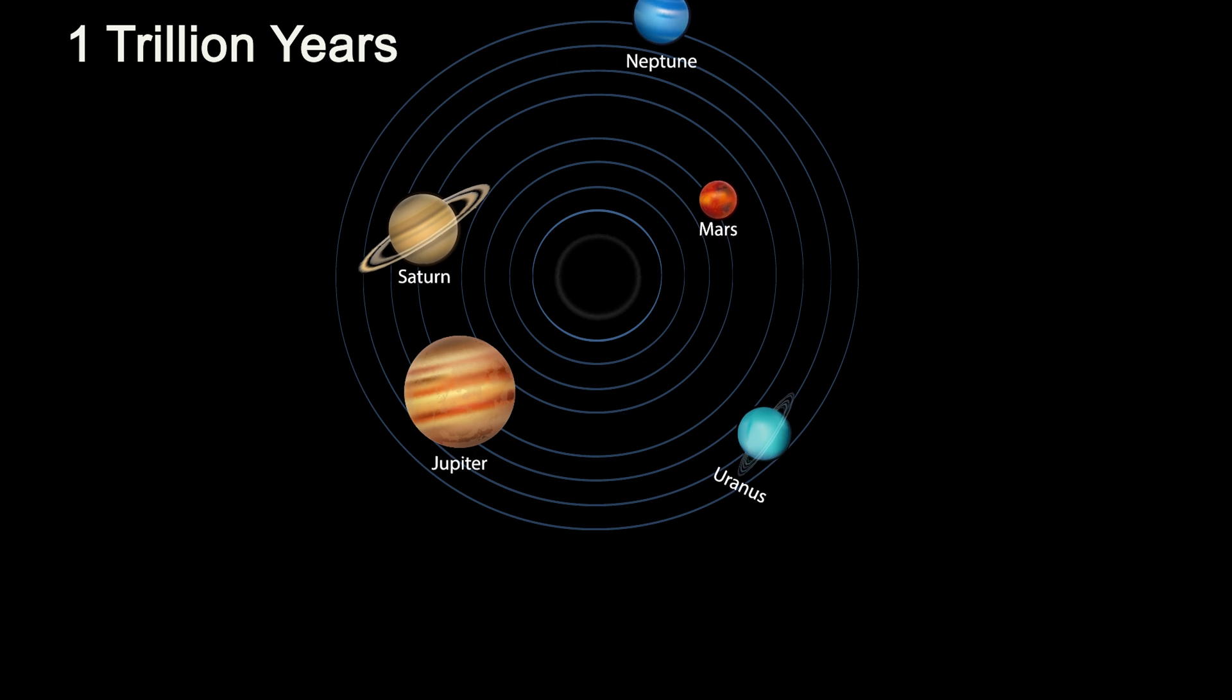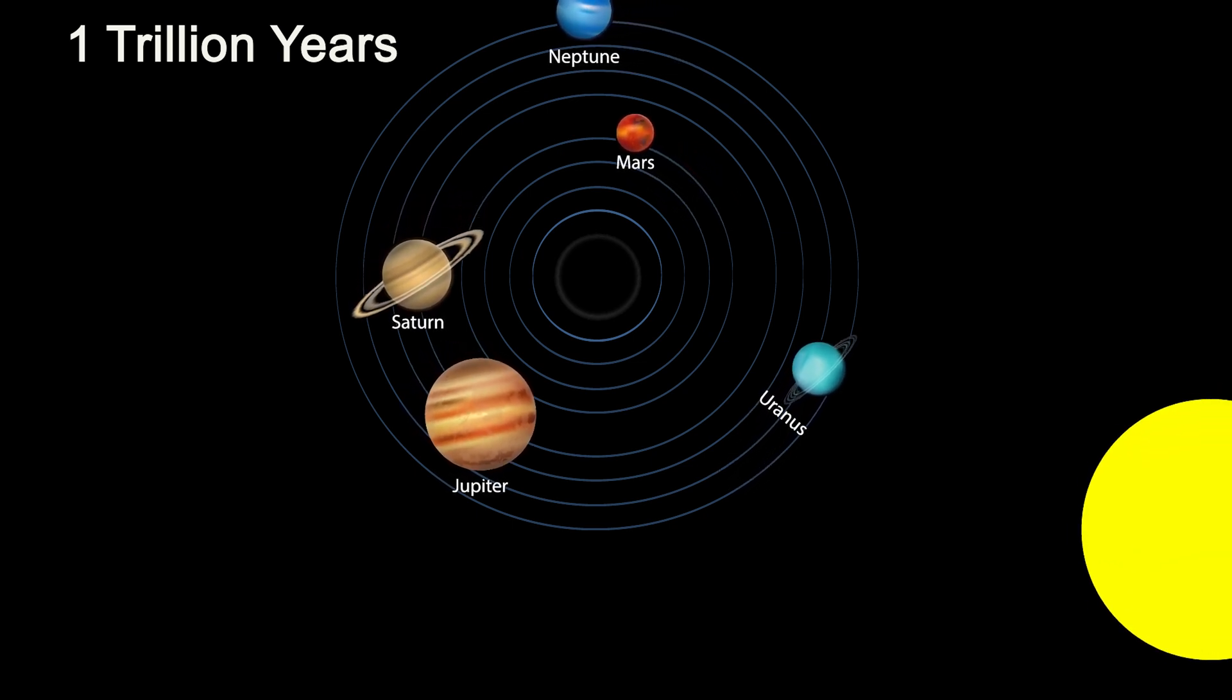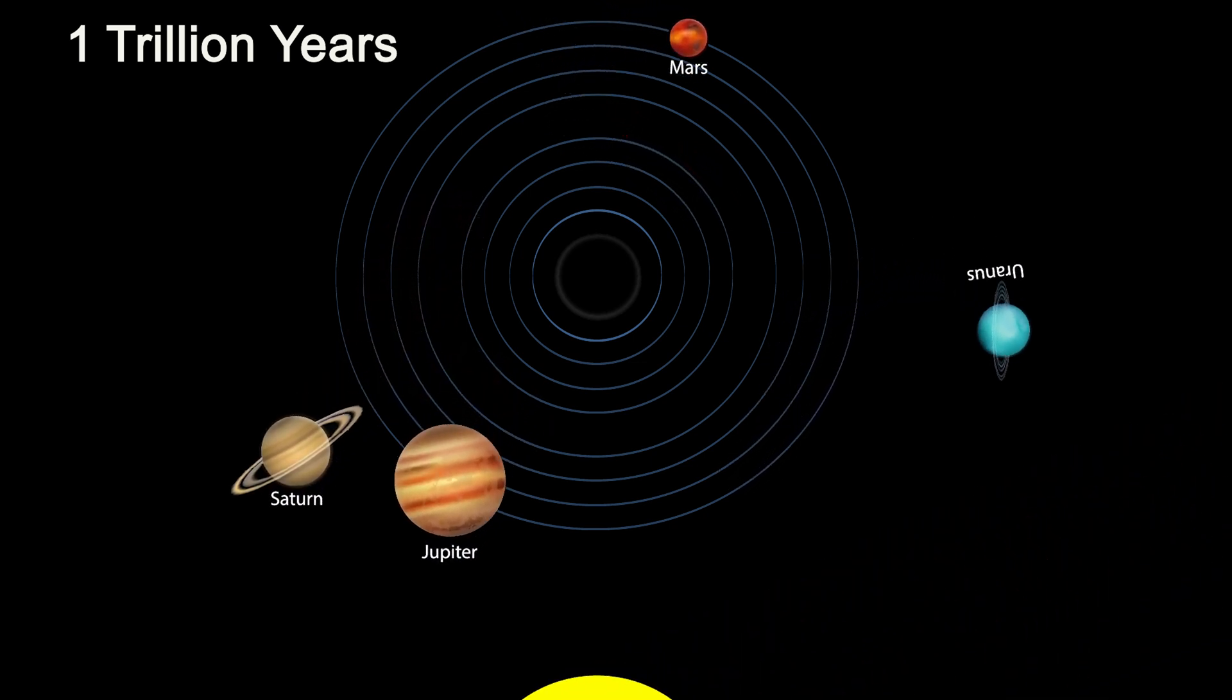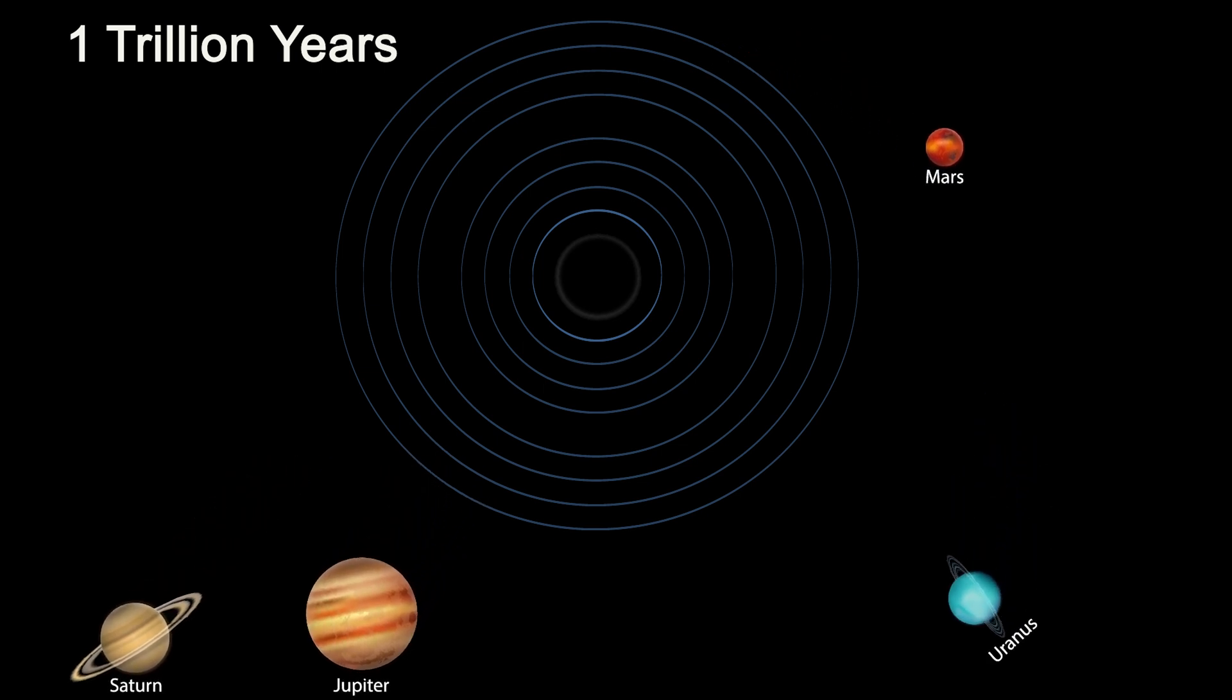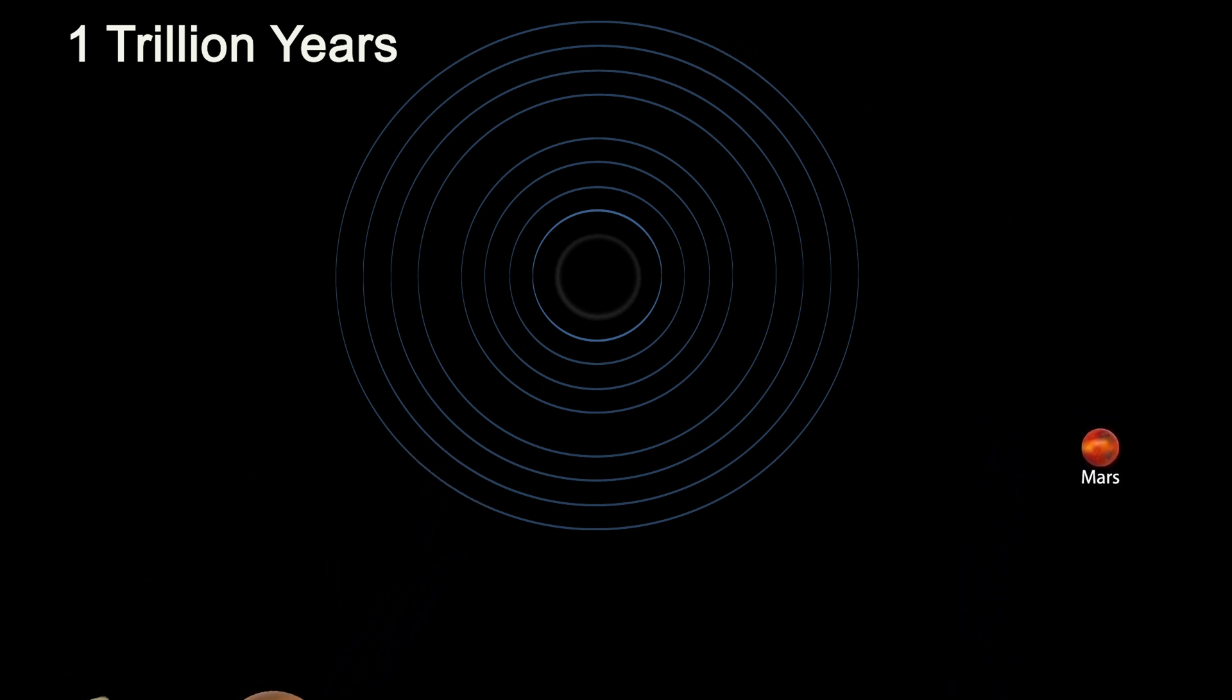Then, over the course of trillions of years, when a nearby star passes so close to the remaining planets, they undergo major instability and gain enough gravitational energy to escape the sun and never come back.